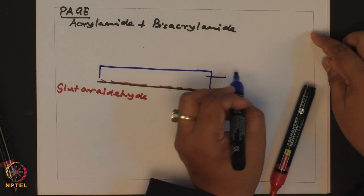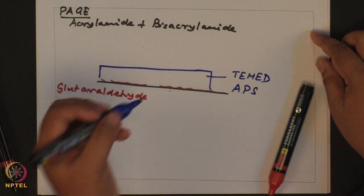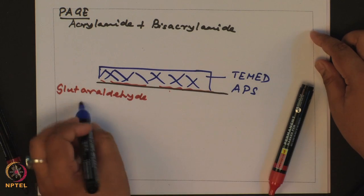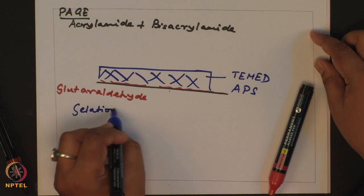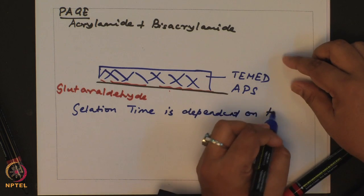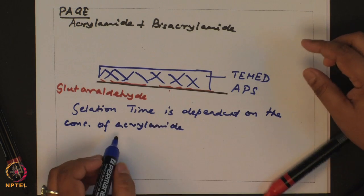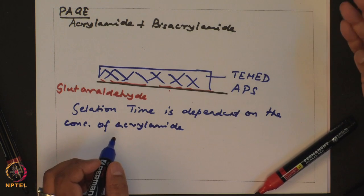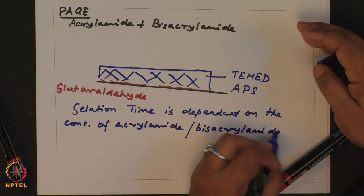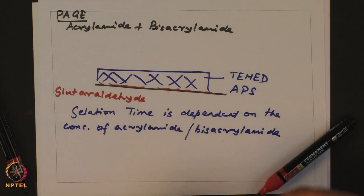This polymerizing solution has TEMED and APS in it. And these allow it to gel. So if you let it sit, this will form a network. The gelation time is dependent on the concentration of acrylamide. Higher concentration of acrylamide or bisacrylamide - higher amount of crosslinking protein will ensure that this gel gets polymerized much faster.